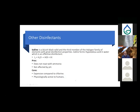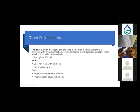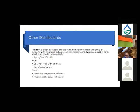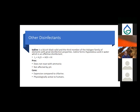Iodine is another member of the halogen family with great disinfectant properties. It forms hypoiodous acid in water and is an effective disinfectant. Its advantages include that it does not react with ammonia — so no secondary reactions occur — and it is not affected by pH. It also provides a residual. The downside: it's expensive compared to chlorine and is more physiologically active to humans.